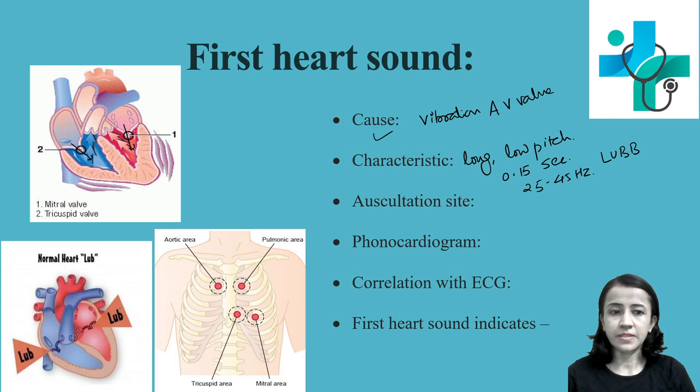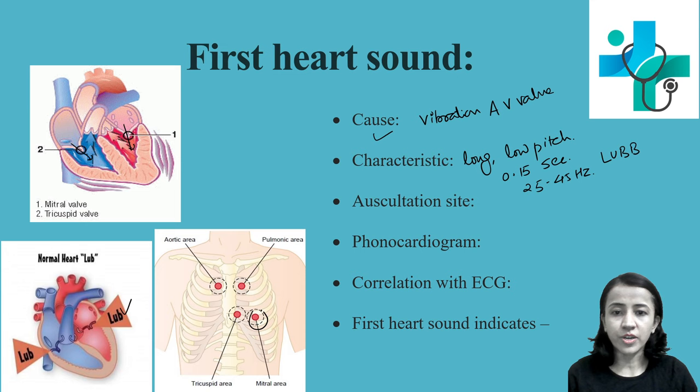The auscultation site for the first heart sound is over the fifth intercostal space, just inside the mid-clavicular line — this is the mitral area where it is heard best. It can also be auscultated at the tricuspid area. These two are the auscultation sites for the first heart sound.